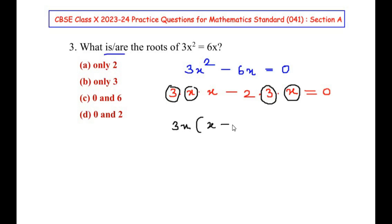Now we have two factors here: one factor is 3x and the second factor is x - 2. Let us equate these factors to 0. So we get 3x = 0, which is our first factor, and the second factor is x - 2 = 0.